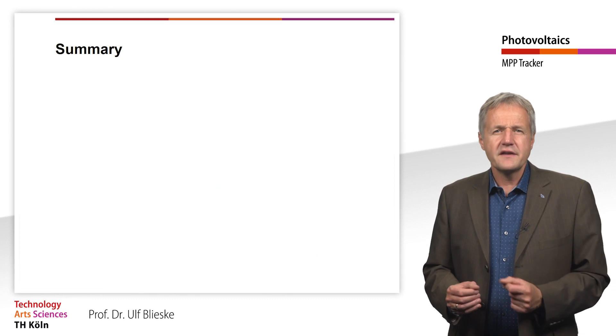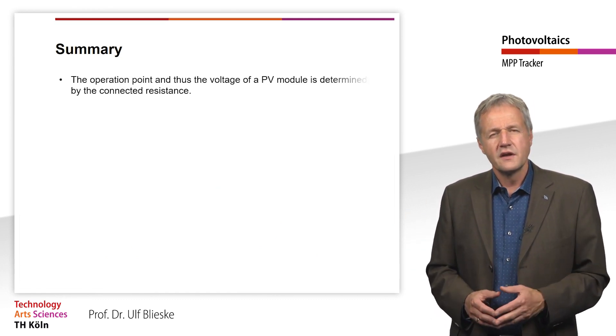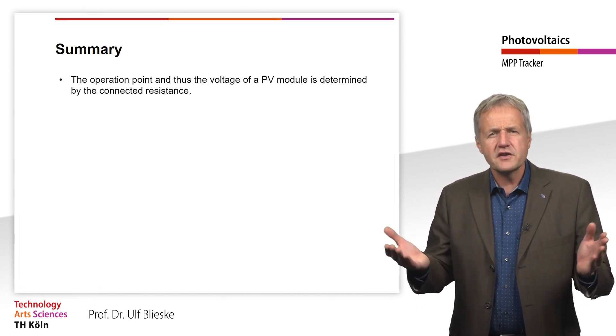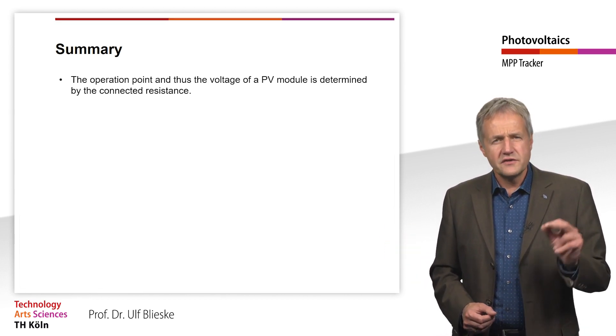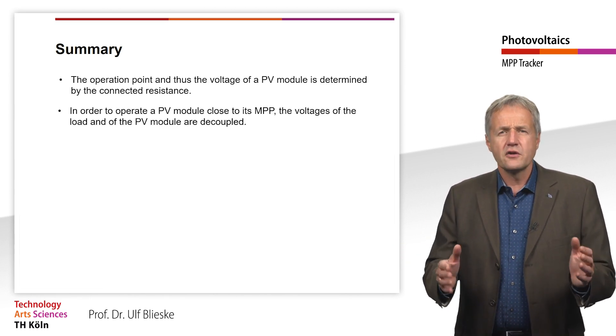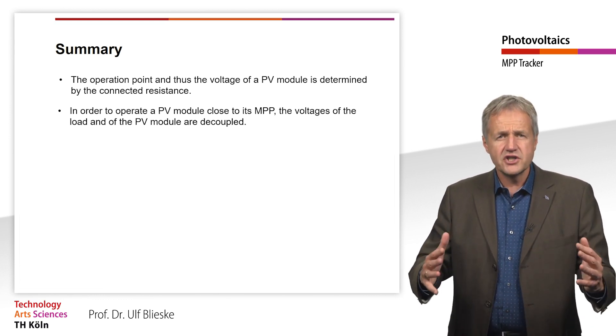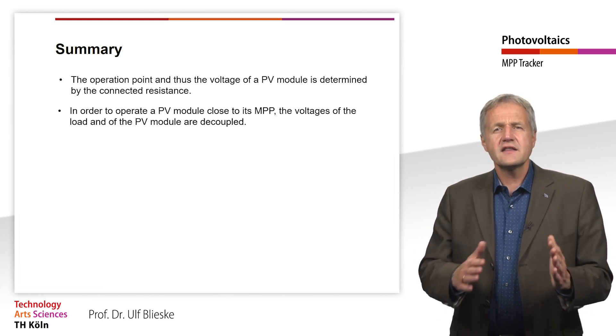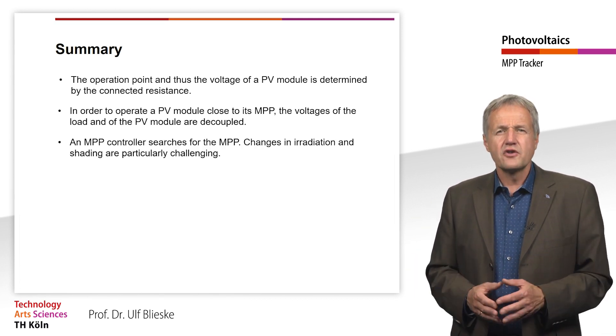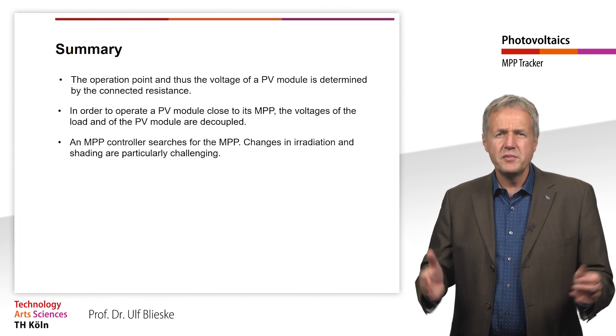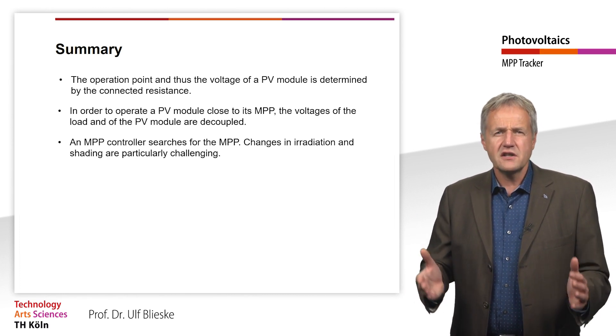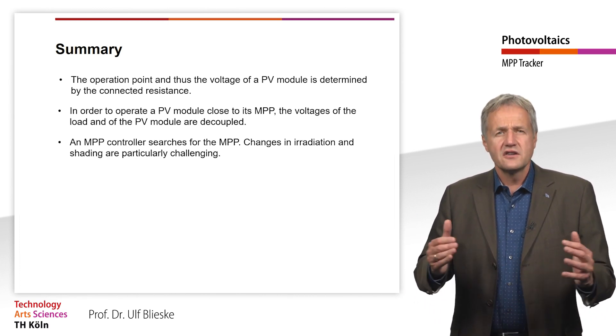Let me summarize the main points of this unit for you. The operating point and thus the voltage of a PV module is determined by the connected resistance. In order to always be able to operate a PV module close to its MPP, the voltage of the consumer and the PV module are decoupled. An MPP controller searches for the MPP using a sophisticated algorithm. Changes in irradiation and shading are particularly challenging.